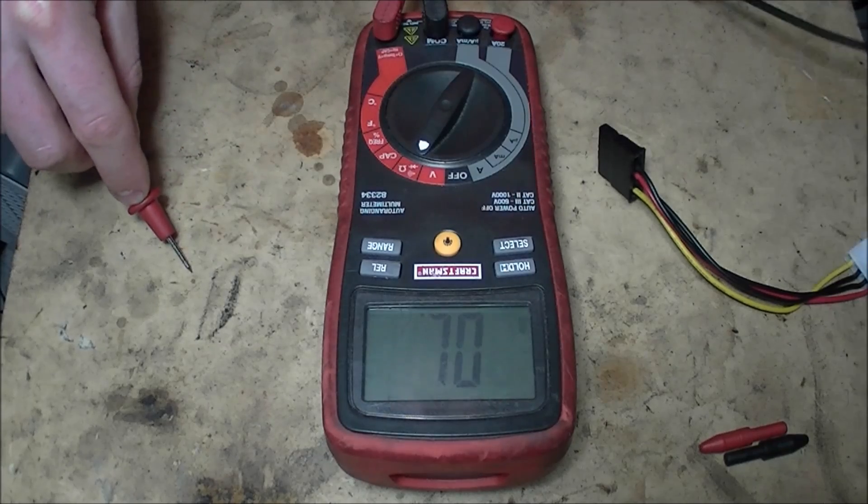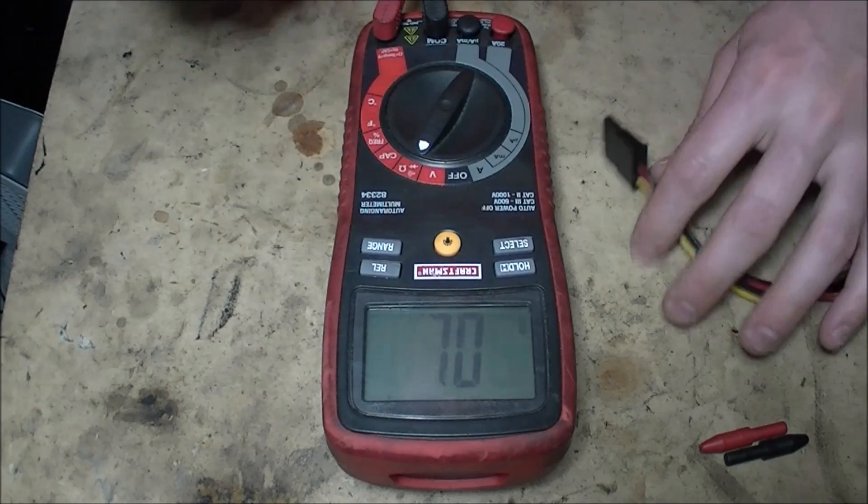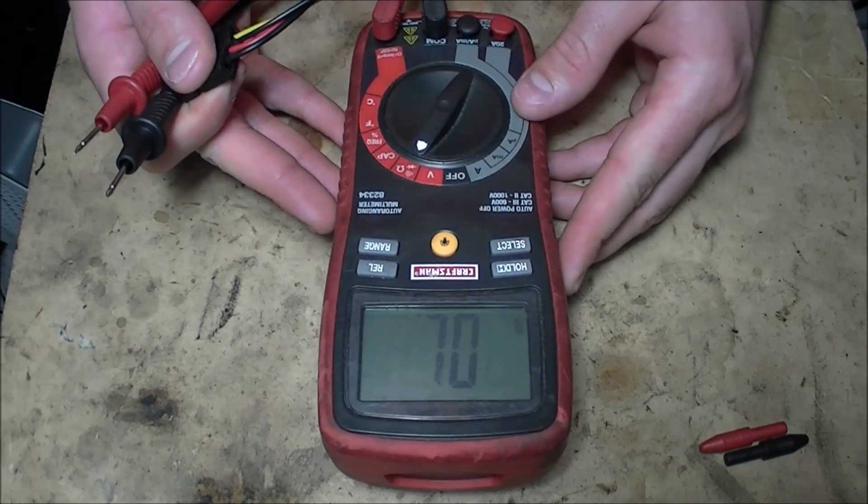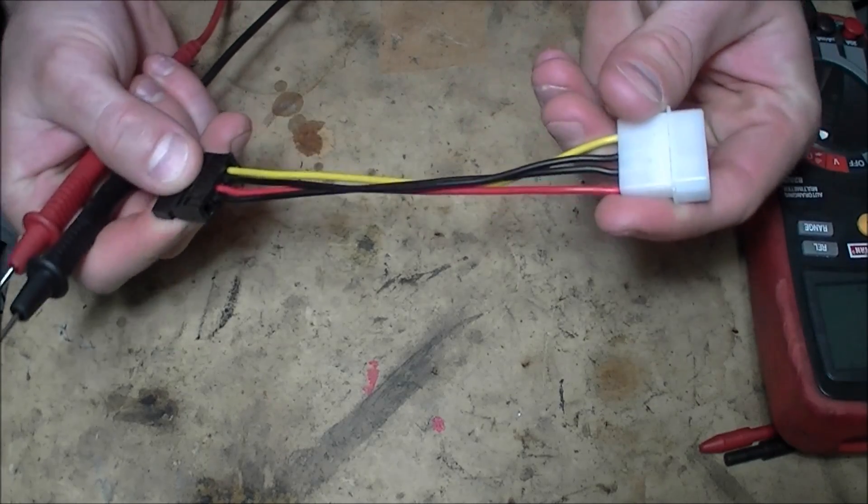I'm going to move the multimeter out of the way, and I'm just going to take this wire. They're all different colors. I'll just twist it up. Okay, so basically we want to find this yellow wire right here.